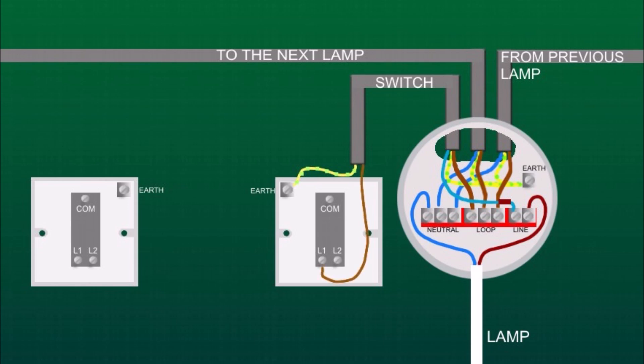The brown wire goes to L1 and the blue wire goes to L2. Now we need to link these two switches together so we need to use three core and earth cable.